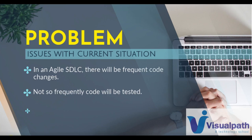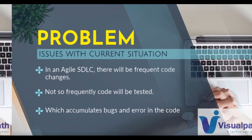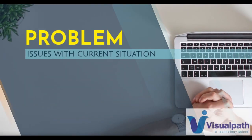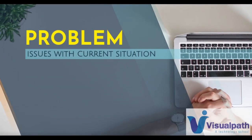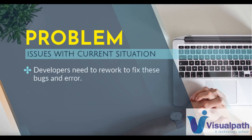But not so frequently the code will be tested. If there are any bugs or errors, they will be known late. Due to this, bugs and errors in the code keep accumulating. Now the problem goes more deeper — developers need to rework to fix these bugs and errors, which is a time-consuming process, and teams would already be approaching the deadline.